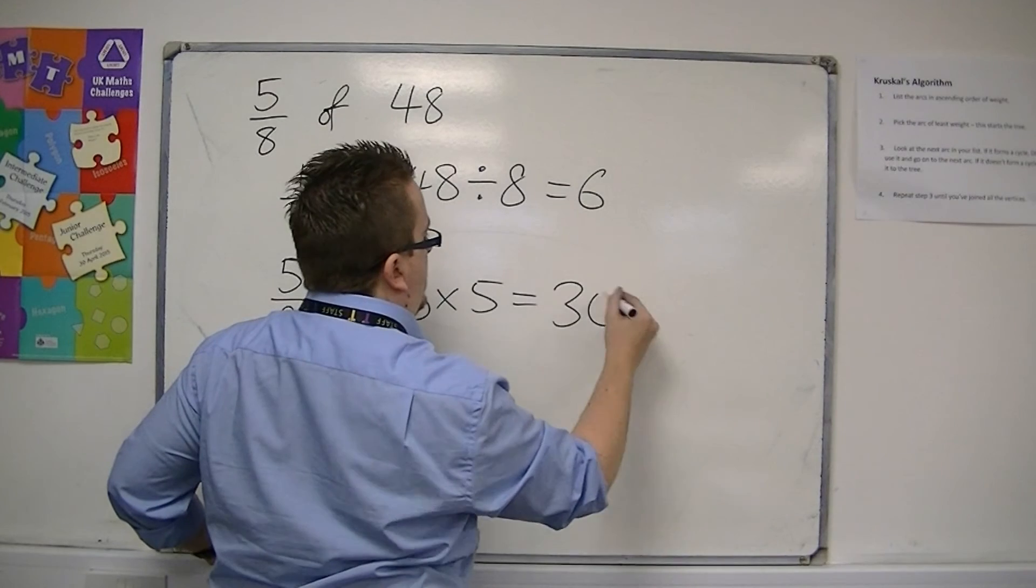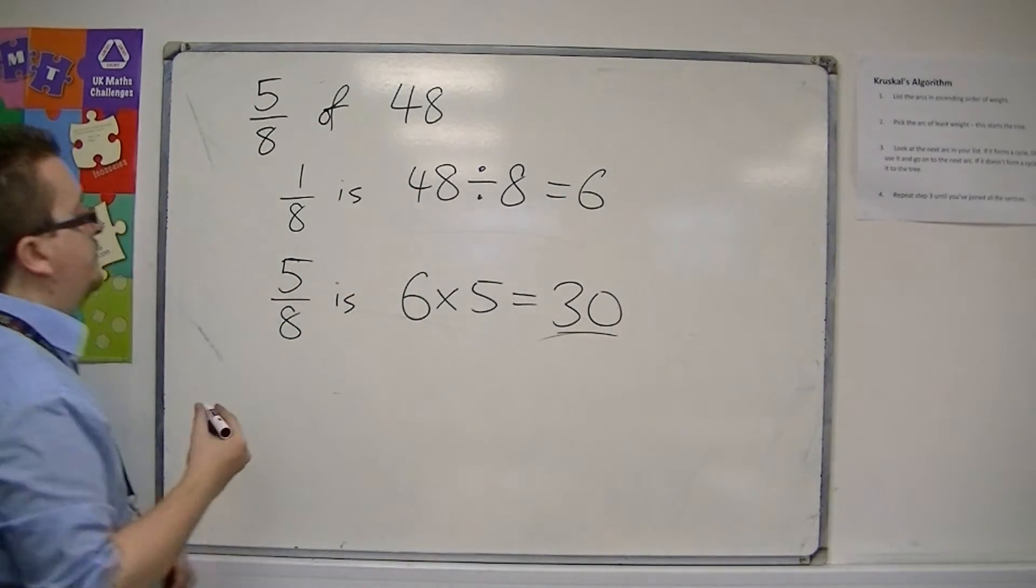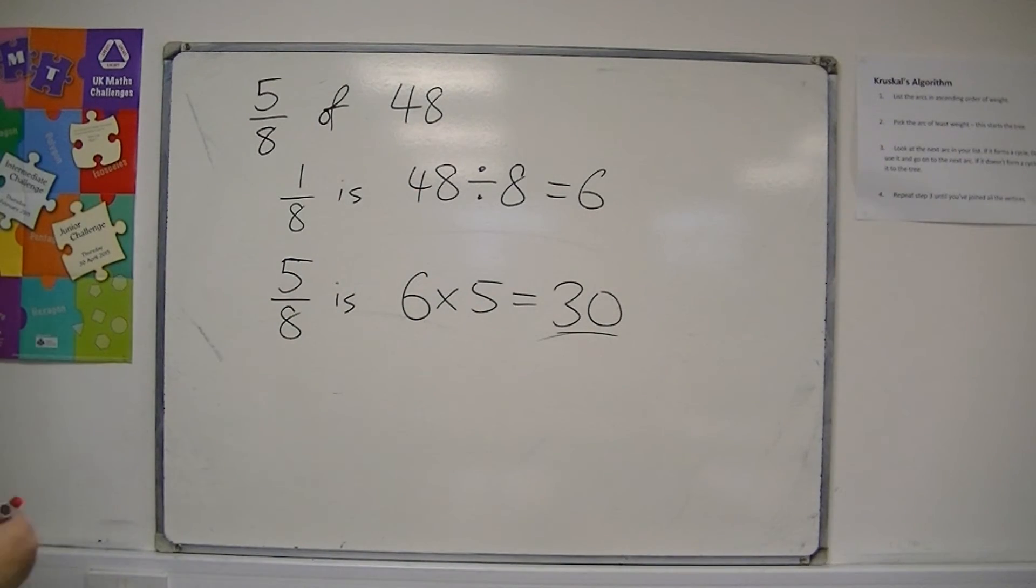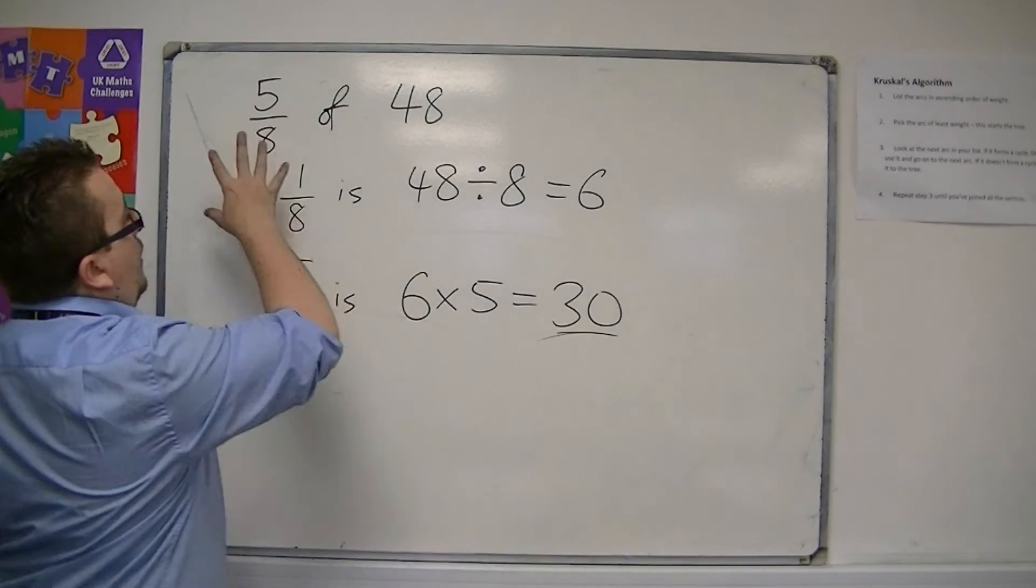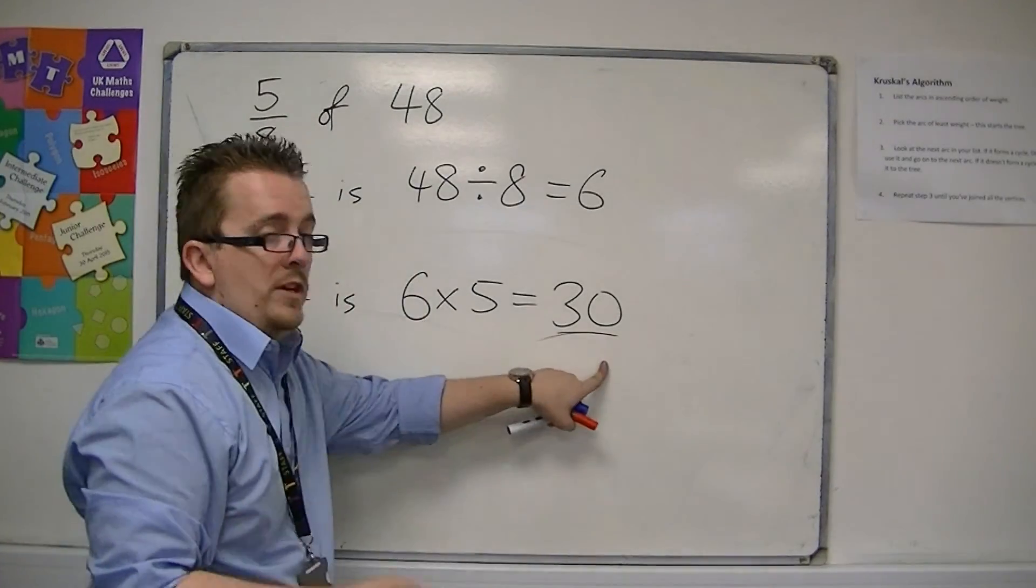So we get 30. So five-eighths of 48 is actually 30.